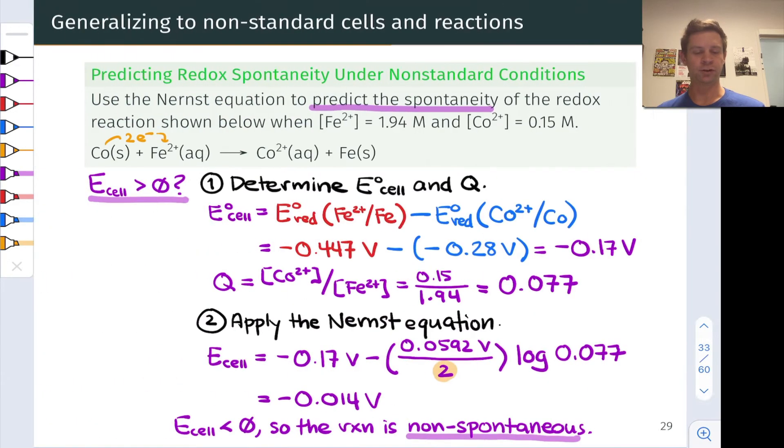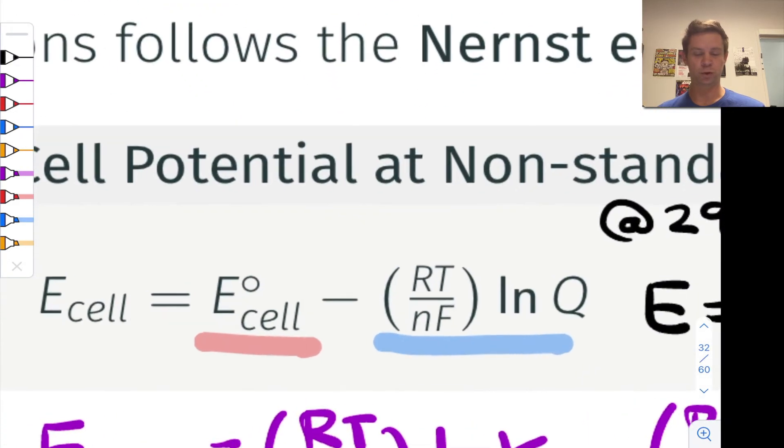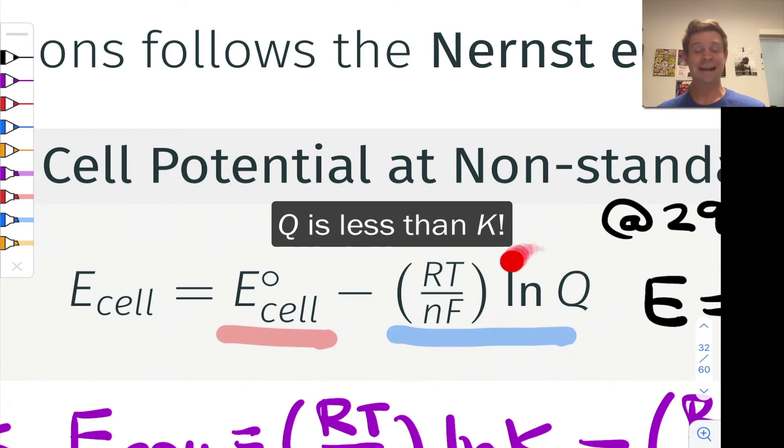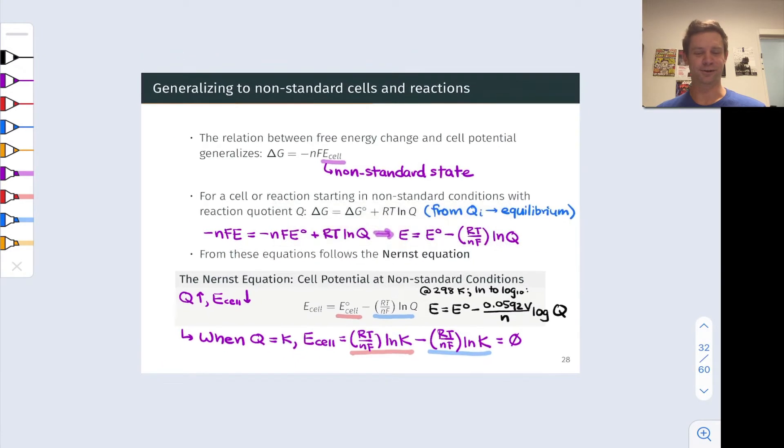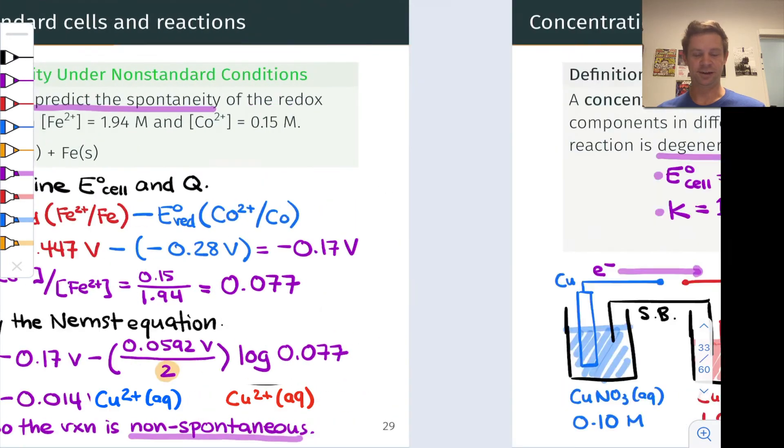If we circle back to the Nernst equation one more time, with the natural log of Q negative because the value of Q is less than one, I've got a positive cell potential, even though E°cell is equal to 0. That's the beauty of concentration cells.